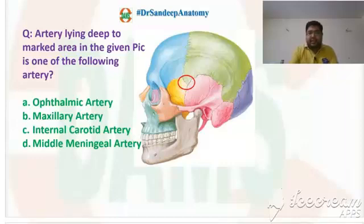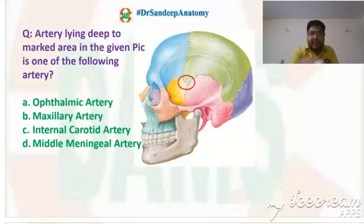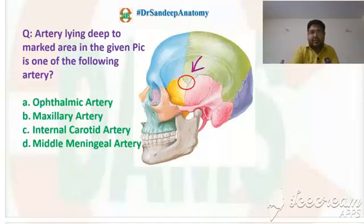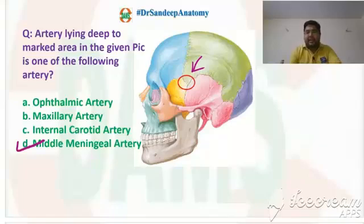The question is: which artery lies deep to the marked area in the given picture? The area marked here is the pterion. So this is the pterion — what lies deep to the pterion? The answer is pretty simple: that is the middle meningeal artery.